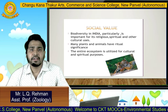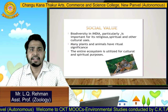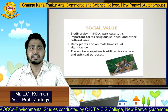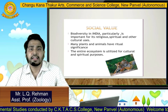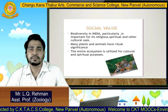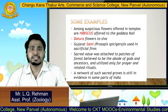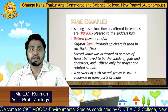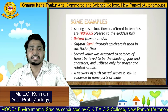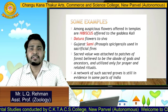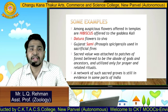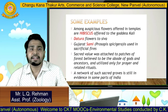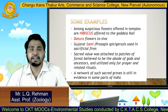Next is social value. Biodiversity in India particularly is very important for its religious, spiritual, and other cultural uses. Many plants and animals have ritual significance, and entire ecosystems are utilized for cultural and spiritual purposes. Examples include auspicious flowers offered in temples such as hibiscus offered to goddess Kali and Datura offered to Shiva, and Gujarat sami used in sacrificial fires. The sacred value was attached to patches of forest believed to be abodes of gods and ancestors, and a network of such sacred groves is still present in India.